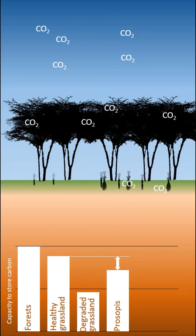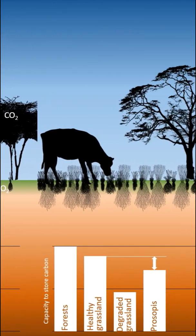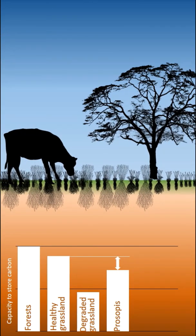But healthy grasslands can store as much or even more carbon than prosopis. Therefore, to fight climate change and to secure the livelihoods of communities, it is important to use grasslands in a sustainable way.